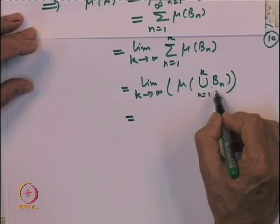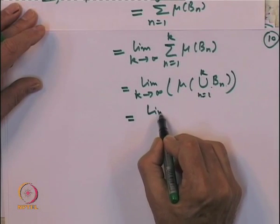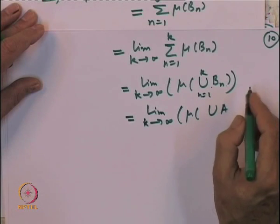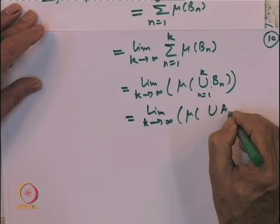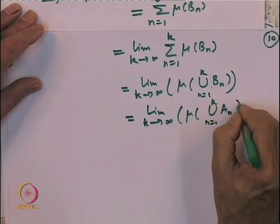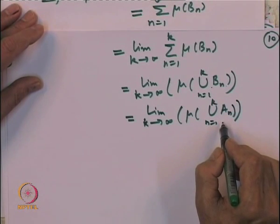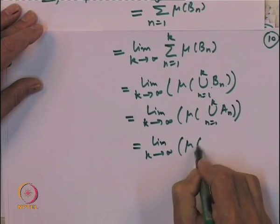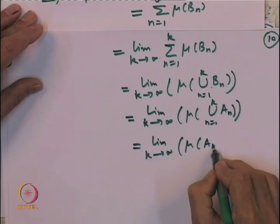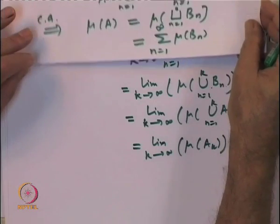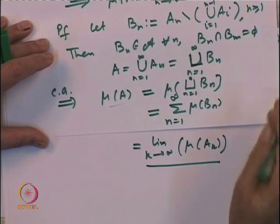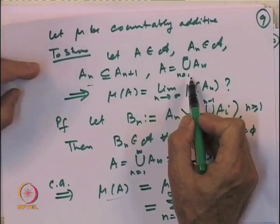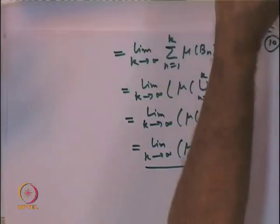The key observation is that the union of B_n for n from 1 to k equals the union of A_n for n from 1 to k. Since A_n's are increasing, this union equals A_k. Therefore mu(A) equals the limit as k goes to infinity of mu(A_k), proving that countable additivity implies the continuity-from-below property.